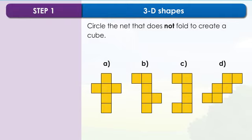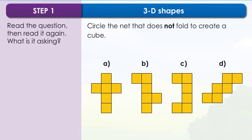Step 1. Read the question, then read it again. What is it asking? The question is asking you to identify the net that will not make a cube.